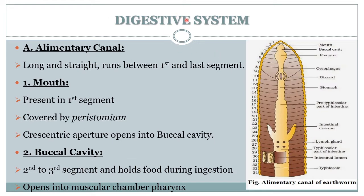The next part is the digestive system of the earthworm. The digestive system of the earthworm is a long, straight tubular structure that runs from the first segment to the last segment. The digestive system consists of the mouth, buccal cavity, pharynx, esophagus, gizzard, stomach, intestine, and the last part is the anus.